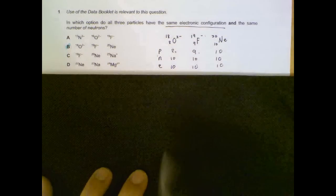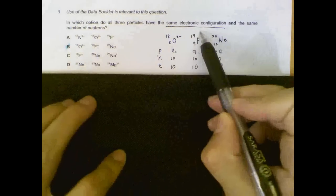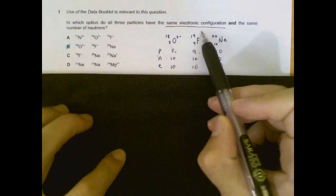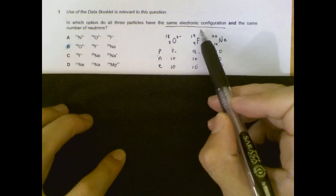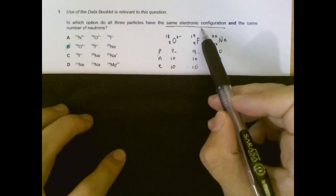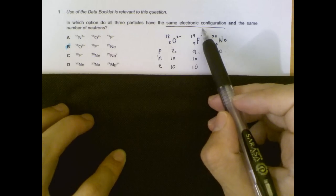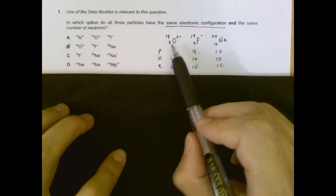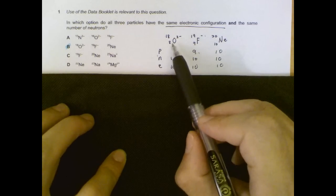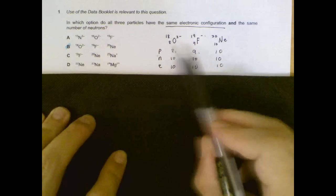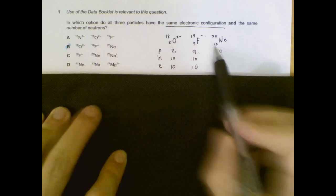Question 1. Which of the particles have the same electronic configuration and the same number of neutrons? Let's do the electronic configuration first. Electronic configuration depends on the number of electrons. If they all have the same number of electrons, they will have the same electronic configuration. The number of protons we can obtain from the data booklet or the periodic table. So answer is B. You can compare your numbers and values to mine here.